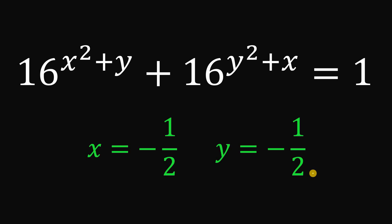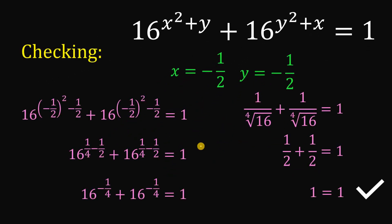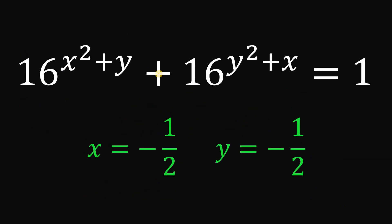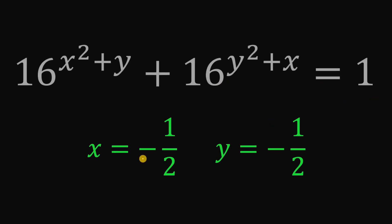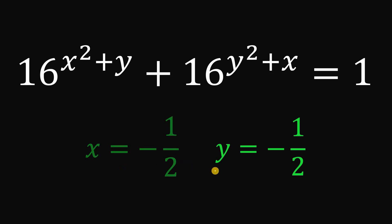But before we end this video, let's check our answer. Replace x and y with negative 1 over 2 and simplify. At the end, we have 1 over 2 plus 1 over 2, which leads to 1 equals 1. Therefore, given the equation 16 raised to the power of x squared plus y plus 16 raised to the power of y squared plus x equals 1, we get x equals negative 1 over 2 and y equals negative 1 over 2. And as always, we are done.